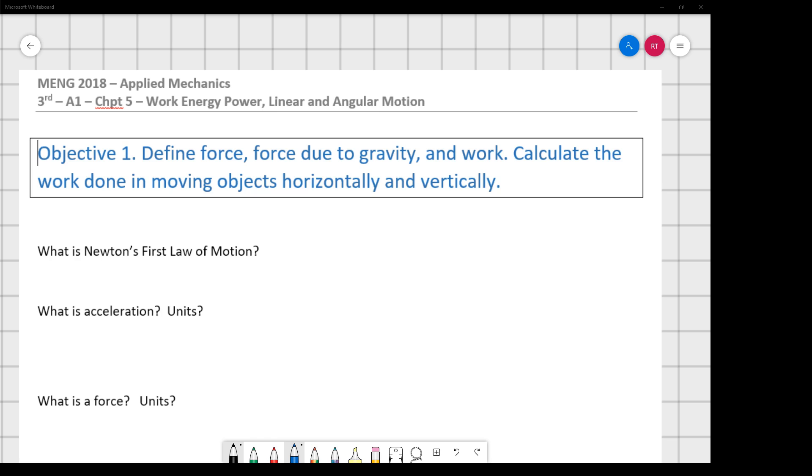Hi, welcome to part one of COVID-19 recovery. This is applied mechanics. We're covering third class A1 chapter 5 work energy power through these modules. If you don't have the worksheet, you can download it off of our Blackboard class site. We're going to work through our worksheets. You'll also have some assignments to work on based on this material that will be available on Blackboard.